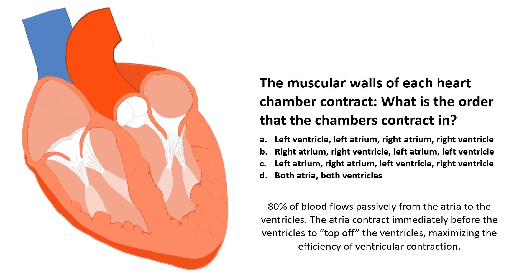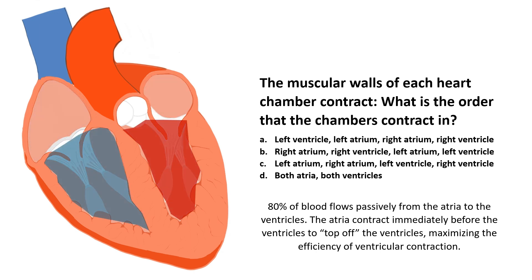The fact that the ventricles are extra full maximizes the efficiency of the contraction. So when your heart beats, it's both atria contracting, then both ventricles.